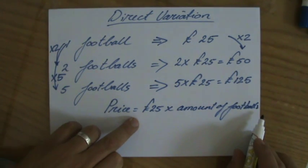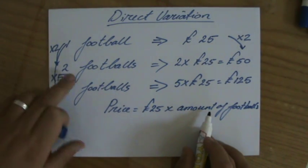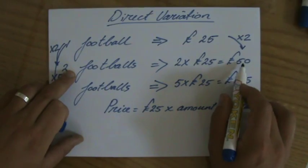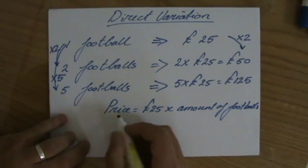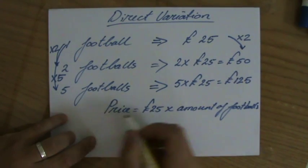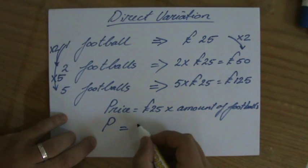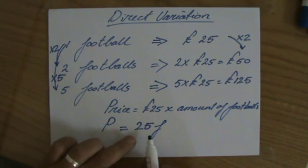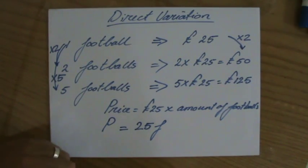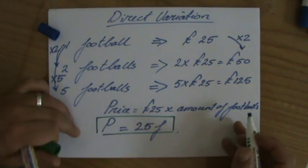The price is 25 times 2 if I buy two of them, so the price is going to be 50. Now, I can shorten that to P equals 25F, where the price equals 25 times the amount of footballs. That is the algebraic equation that belongs to this situation, P equals 25 times F.